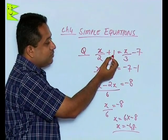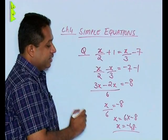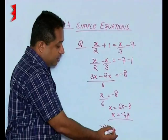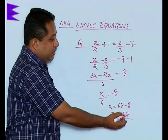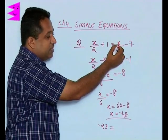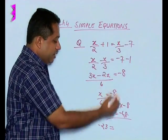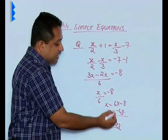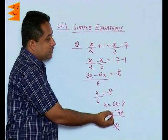When we put x = -48 on the RHS, -48/3 = -16, and -16 - 7 also gives -23. So this is how we check whether the solution we have got is correct or not.